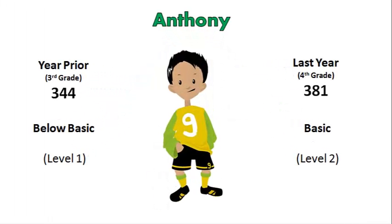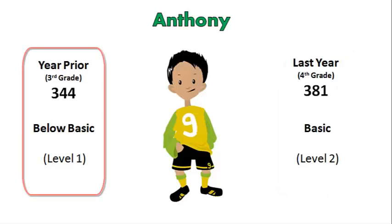Let's look at an example. Anthony was a fourth grade student last year. On his MSP reading assessment in the spring, he scored a 381. In the previous year, his third grade score was 344. There appears to be growth in that his score improved, but relative to what? How do we place Anthony's growth in context?